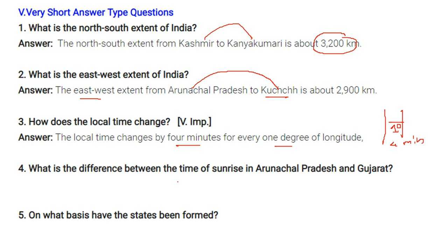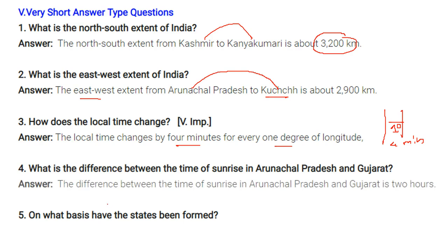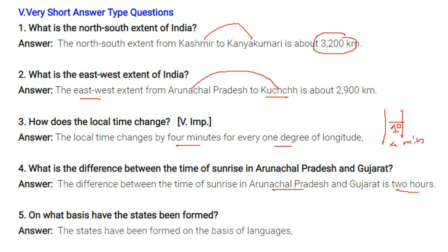What is the difference between the time of sunrise in Arunachal Pradesh and Gujarat? The difference is around two hours. On what basis have the states been formed? The states have been formed on the basis of languages spoken in the region.